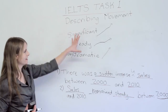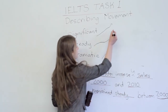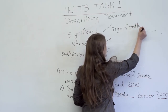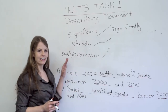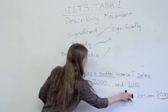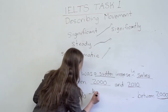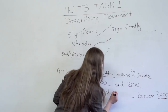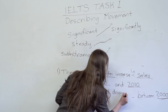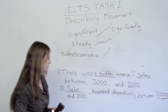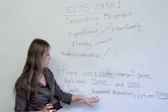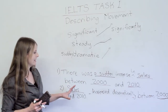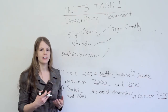Similarly, we can turn these adjectives into adverbs. 'Significant' becomes 'significantly,' 'steady' becomes 'steadily,' 'dramatic' becomes 'dramatically,' 'sudden' becomes 'suddenly.' So instead of saying 'There was a dramatic increase,' you can say 'Sales increased dramatically between 2000 and 2010,' or 'Sales increased steadily,' or 'Sales increased significantly,' or 'Sales increased rapidly.' These are all different ways to add variety and improve your IELTS score.